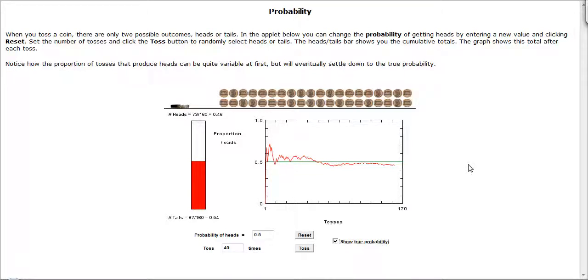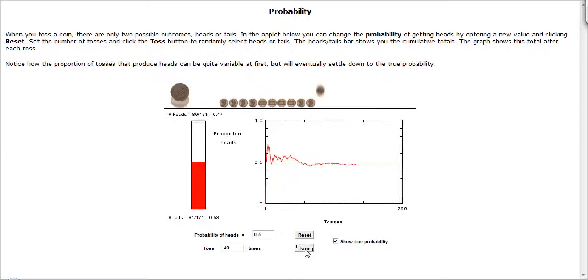Now, I've tossed this coin 160 times right now, and I have the proportion of tails to be about 0.54 and the proportion of heads to be about 0.46. So if we toss this another 40 times, we're starting to see this getting even closer to this true probability.